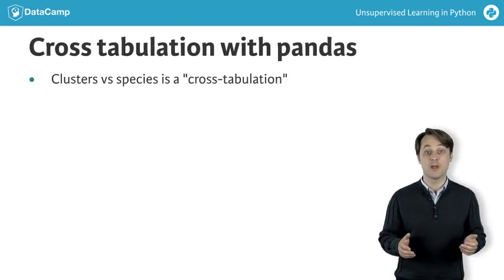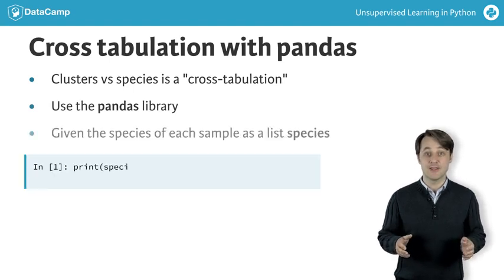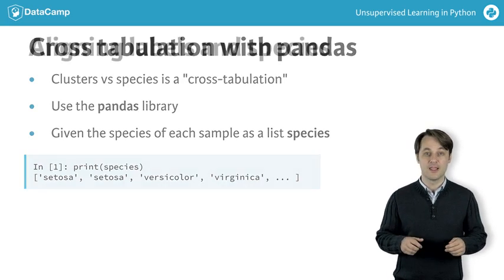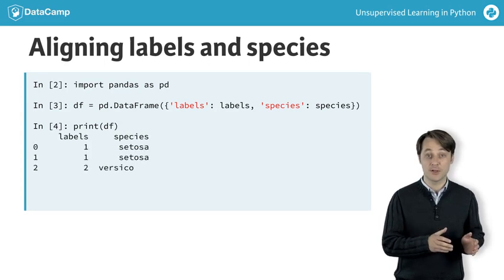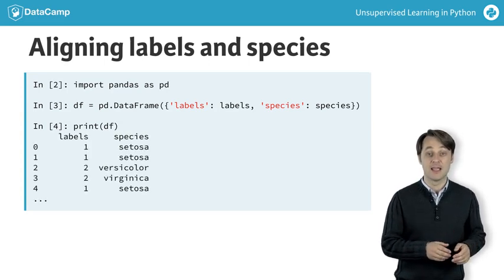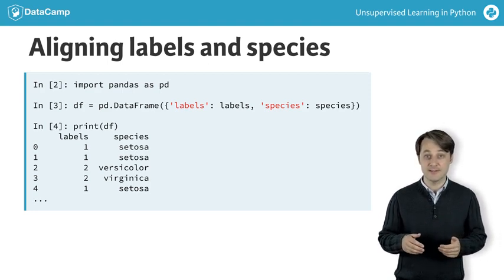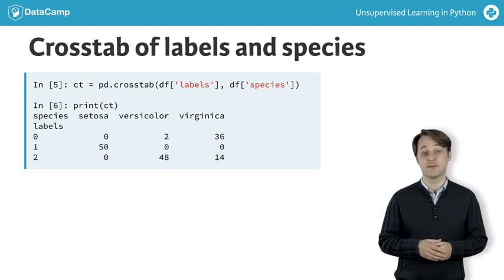To construct one, we're going to use the pandas library. Let's assume the species of each sample is given as a list of strings. Import pandas, and then create a two-column data frame where the first column is the cluster labels and the second column is the iris species, so that each row gives the cluster label and species of a single sample. Now use the pandas cross-tab function to build the cross-tabulation, passing the two columns of the data frame.